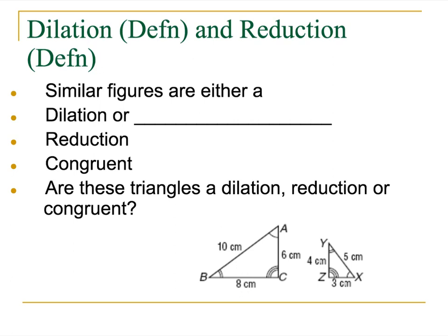So we've got dilation and reduction. If you've ever been to the eye doctor, you've had your eyes dilated. Then what happened to your pupils? They got bigger. Reduction, smaller. So dilation is getting bigger, reduction is getting smaller, or they could be congruent. Similar figures can be congruent. Congruent, they're similar. Similar, not necessarily congruent.